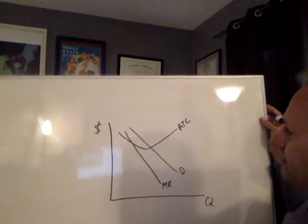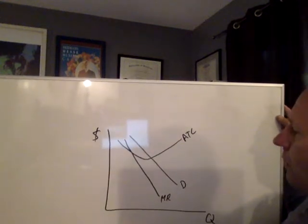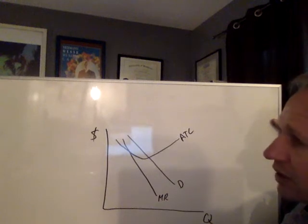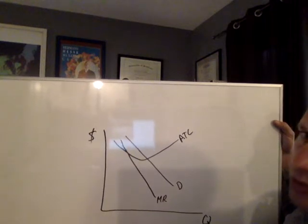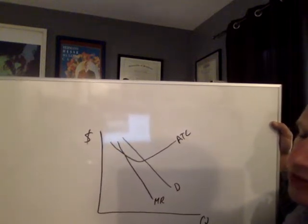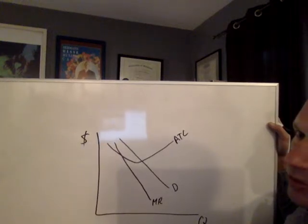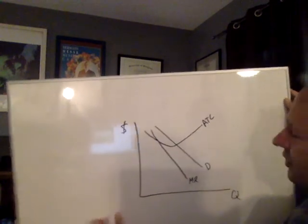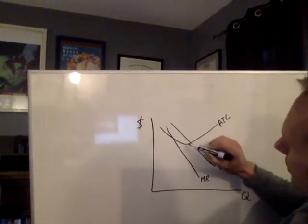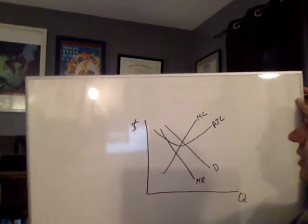Now I want to draw marginal cost. What do I need to think about before I draw marginal cost? Where it goes and what it's shaped like. Marginal cost looks like a check mark. Where do I have to have it in the model? Marginal cost always crosses average total cost at the minimum of average total cost.